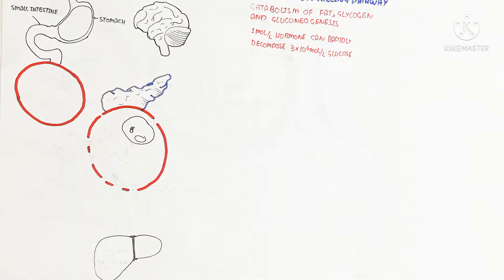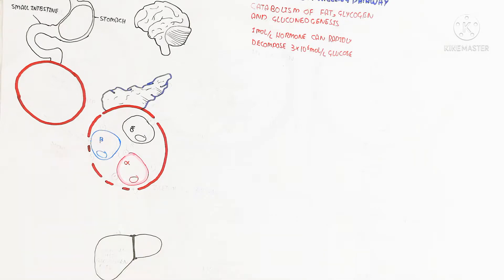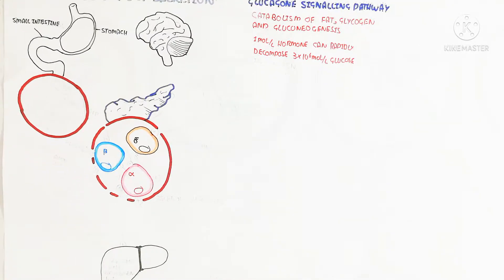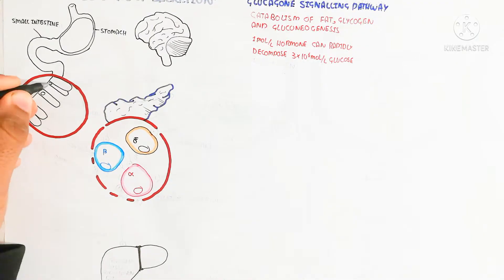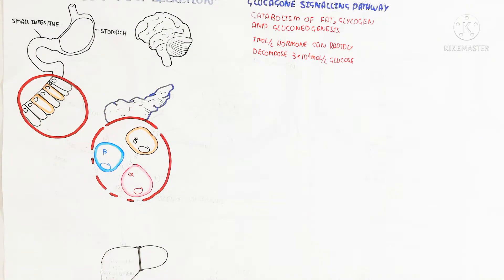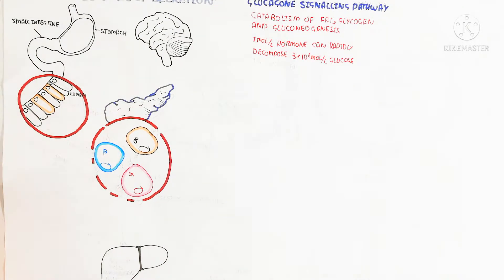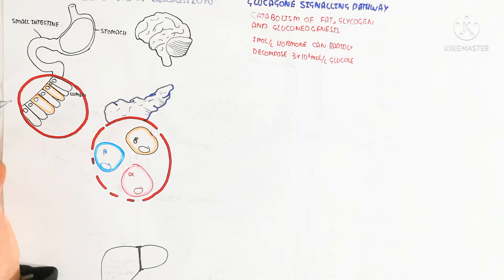The pancreas contains the islet of Langerhans, which contains alpha cells, beta cells, and delta cells. On the other hand, inside the lumen — the small intestine — there are enterocytes and enteroendocrine cells.